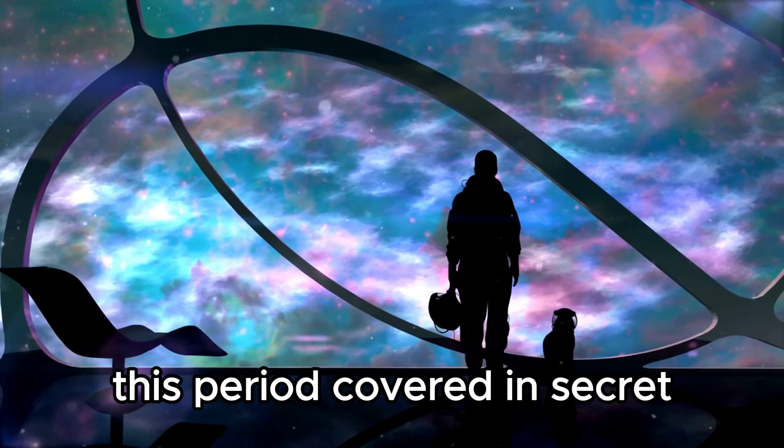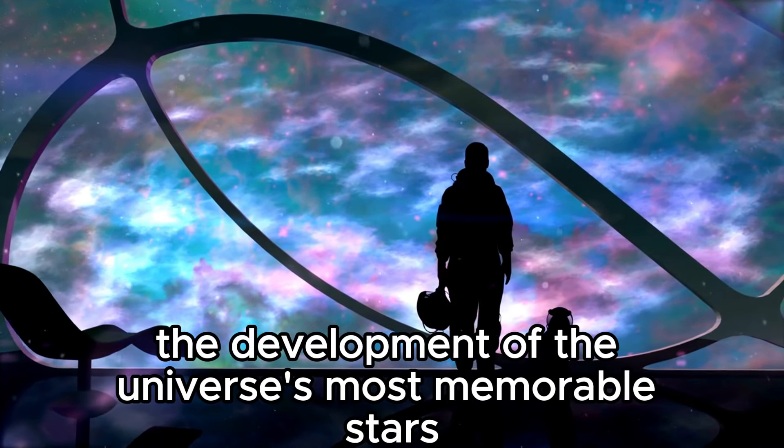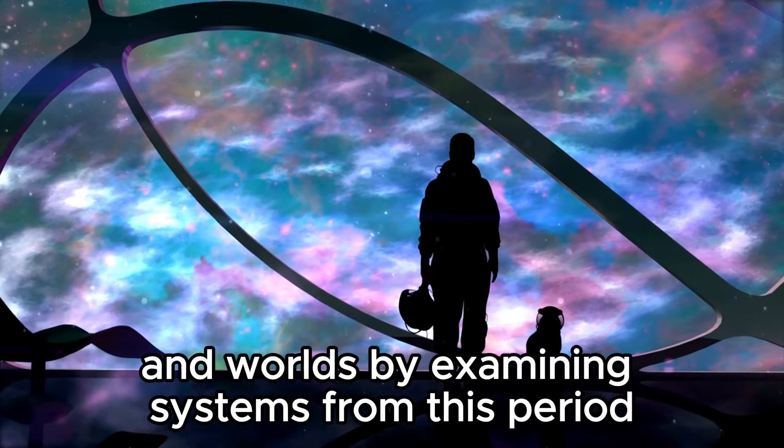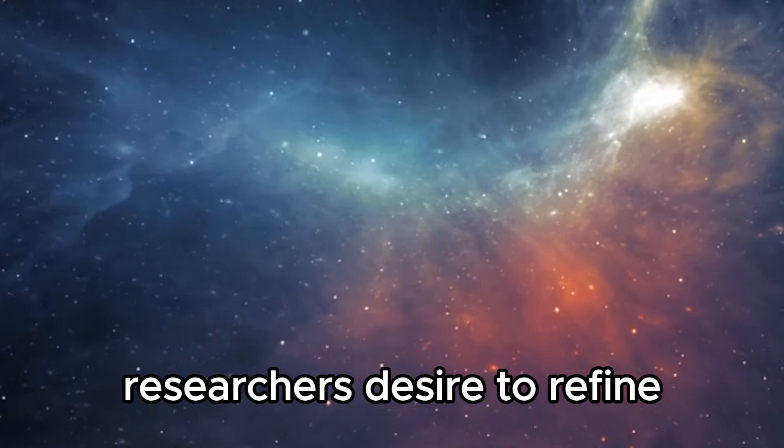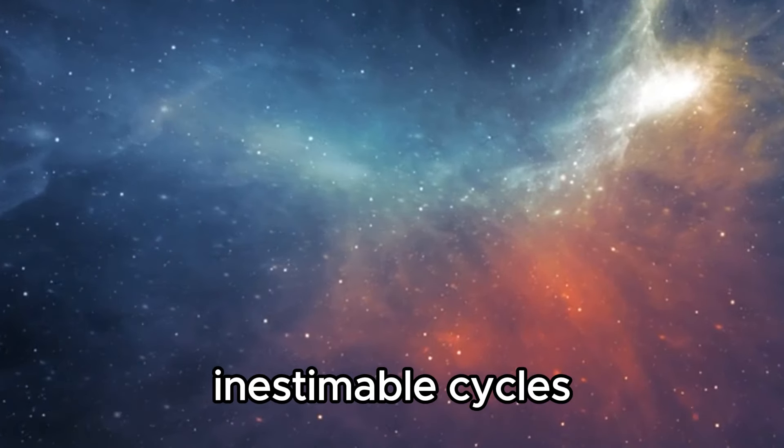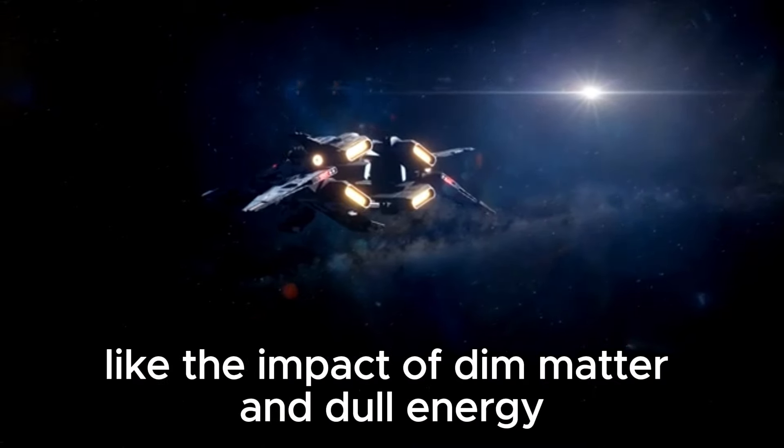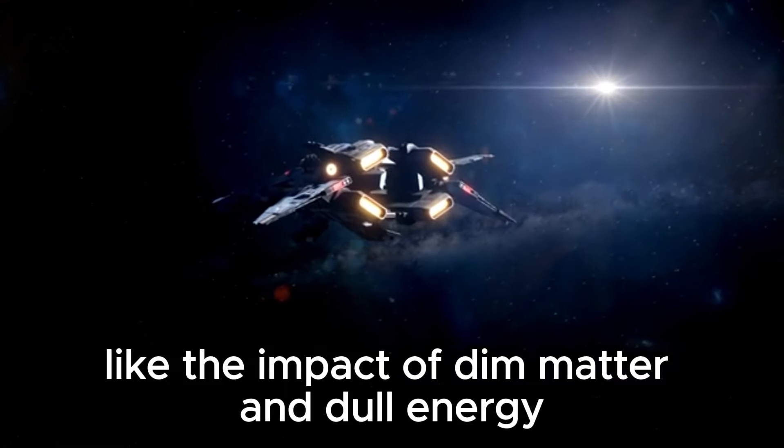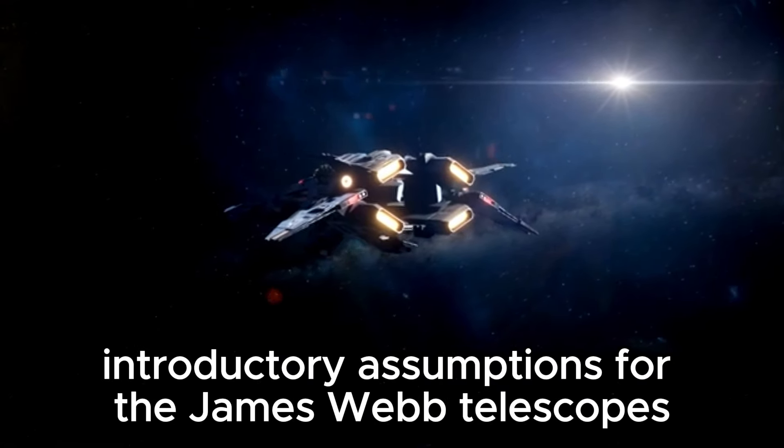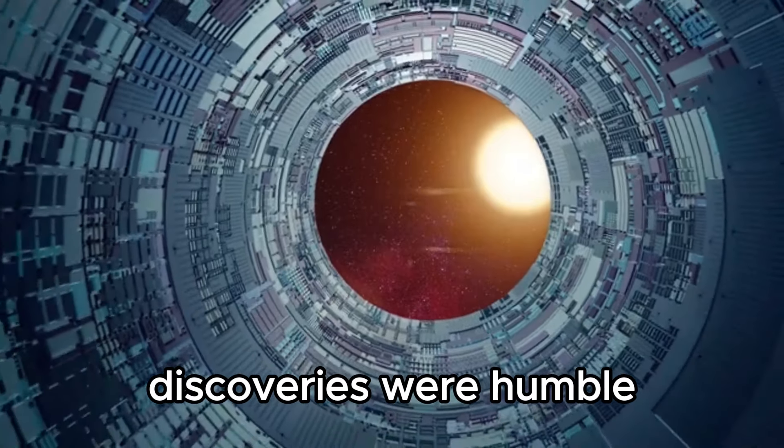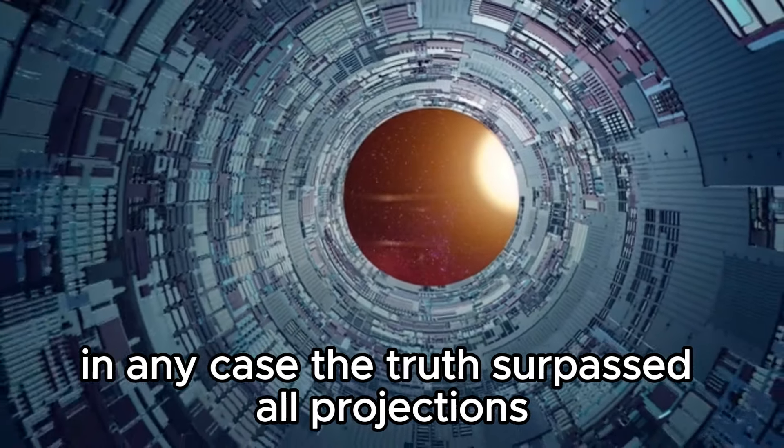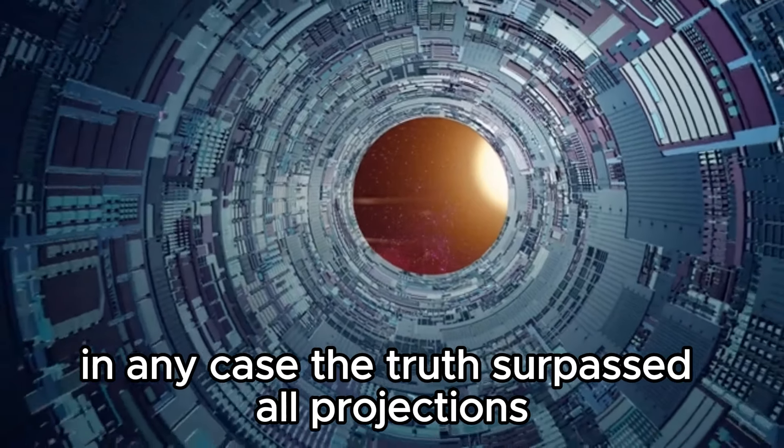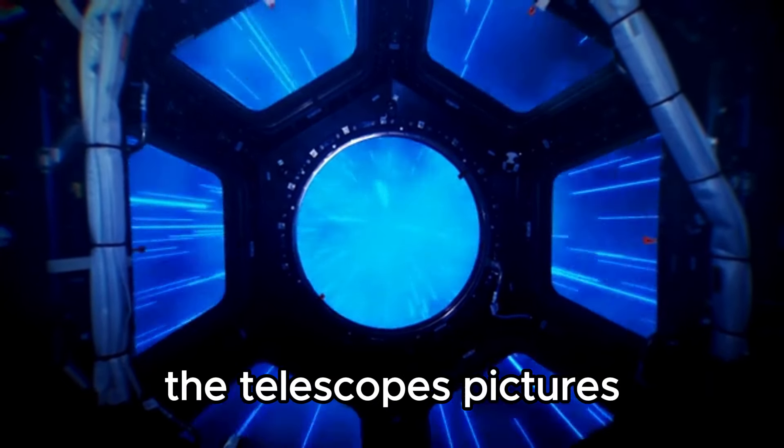The James Webb Telescope, positioned a long way from natural impedance and furnished with state-of-the-art innovation, was intended to dive into the universe's earliest age known as grandiose sunrise. This period, covered in secret, denotes the development of the universe's most memorable stars and worlds. By examining systems from this period, researchers desire to refine how they might interpret major inestimable cycles, like the impact of dim matter and dull energy.